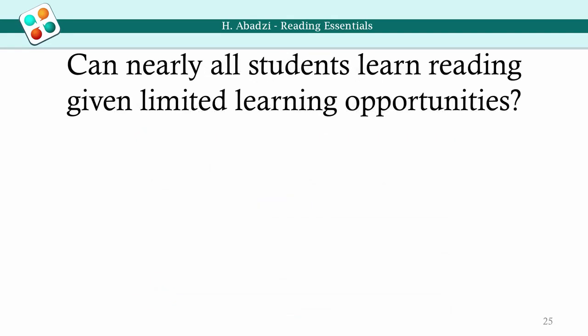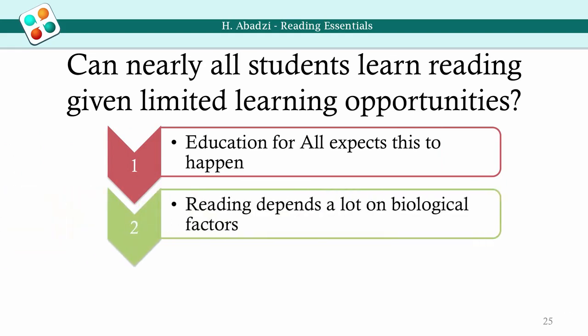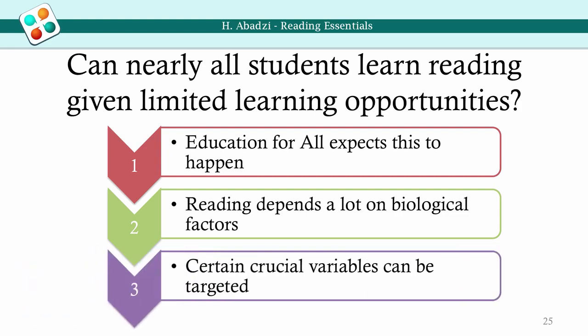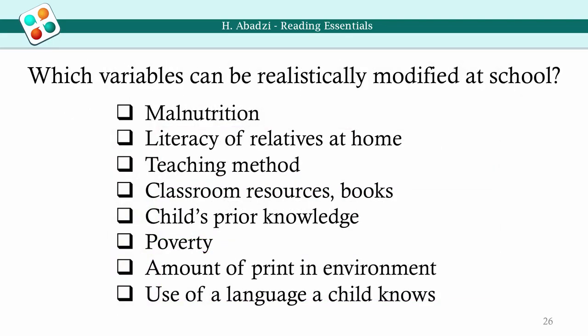Under the Education for All initiative, all students are expected to learn. How do we help nearly all students learn basic skills under conditions of limited opportunity? This is what cognitive science can offer. It is important to focus on the variables that matter the most for learning and design instruction accordingly. Many other variables are important, but they may not be realistically modifiable in school. Which variables can be realistically modified at school?